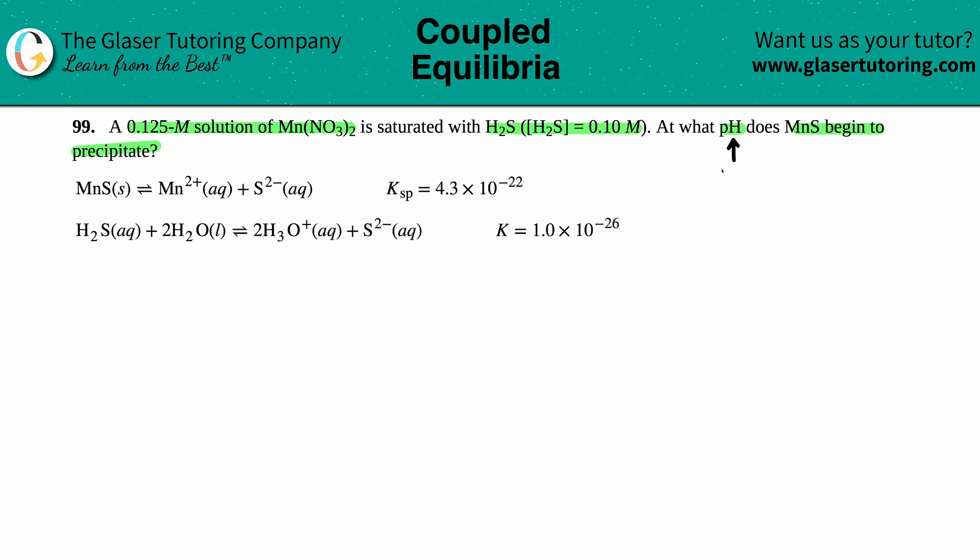So I scan the two equations, and I notice that in this equation, there is an H₃O⁺. So if I can just find that H₃O⁺ concentration, I could find the pH.